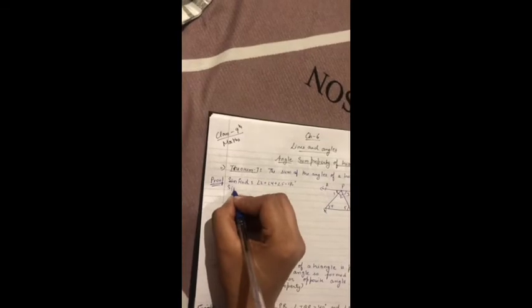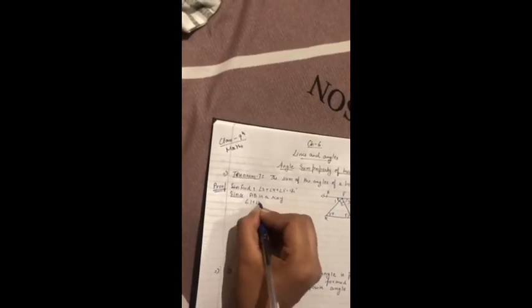So since AB is a ray, so angle 1 plus angle 2 plus angle 3 is equal to 180 degree, linear pair.